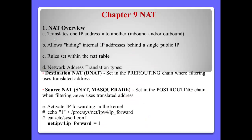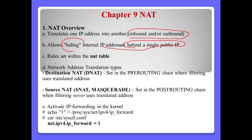Chapter 9: NAT. NAT means translating one IP address into another. NAT has inbound and outbound traffic and allows hiding internal IP addresses behind a single public IP address. Rules are set with the NAT table. In network address translation, there are two types: Destination NAT (DNAT) and Source NAT (SNAT), also called masquerade.